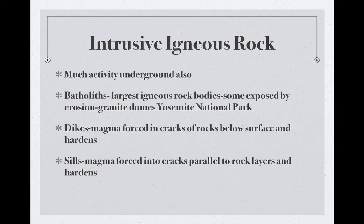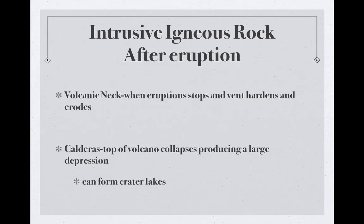Those are intrusive igneous rock structures. After an eruption, you can get what's called a volcanic neck — this is when the eruption stops, the vent hardens, and the surrounding material erodes away. A caldera forms when the top of the volcano collapses, producing a large depression, and then lakes can form on top. When the magma chamber that helped create the volcano becomes empty and hollow, the crater around it can collapse, creating the caldera — and we can get green space or lakes there.